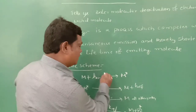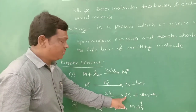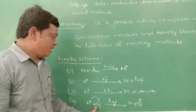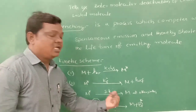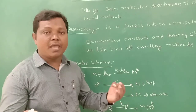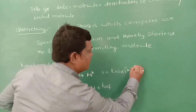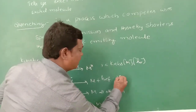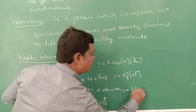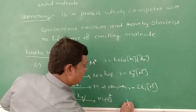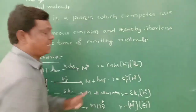The rate equations for each step are: for absorption, rate = K_ABS × [M] × intensity of hν; for emission, rate = K₀F × [M*]; for all other pathways, rate = ΣKᵢ × [M*]; and for quenching, rate = KQ × [M*] × [Q]. The quencher abstracts energy from the electronically excited molecule, thereby shortening its lifetime.